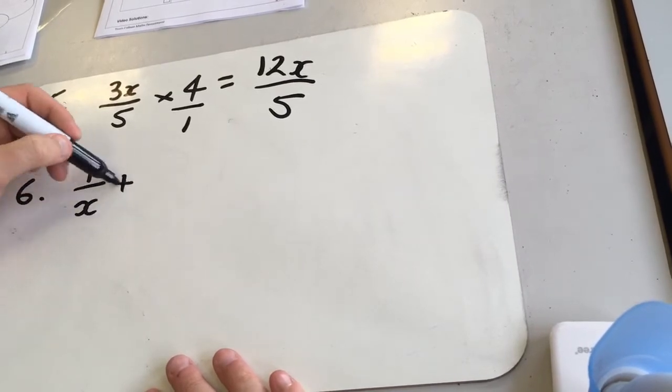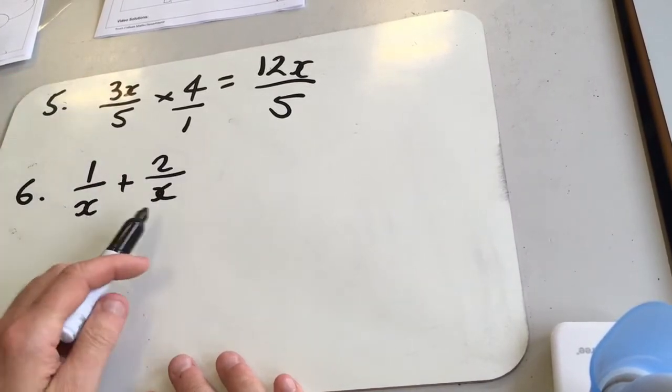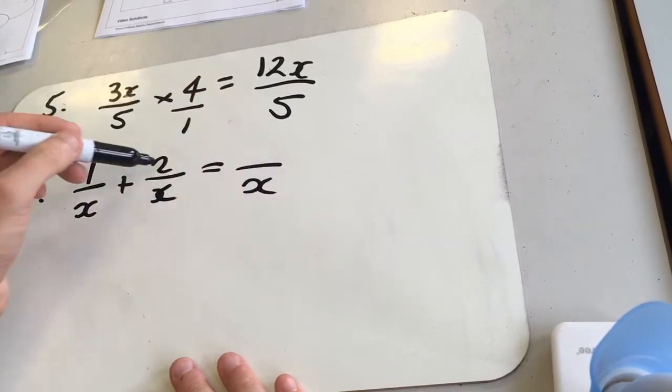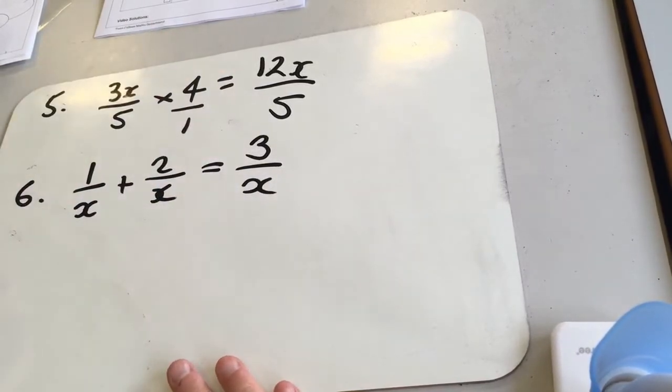Question 6, 1 over x plus 2 over x. Well, they've already got a common denominator, so we'll say this is over x. Add the tops, so we get 3 over x.